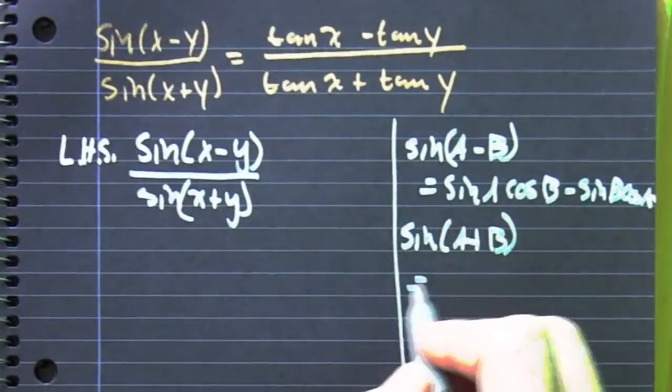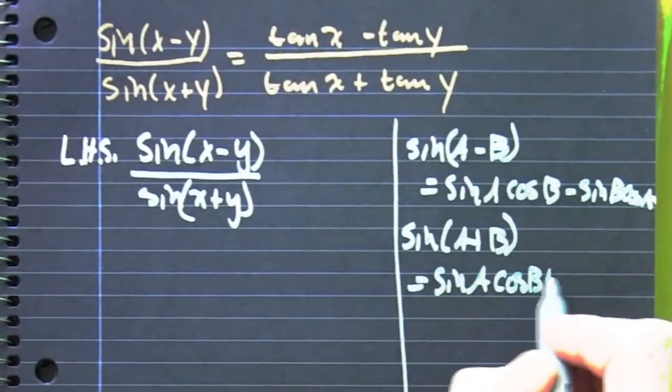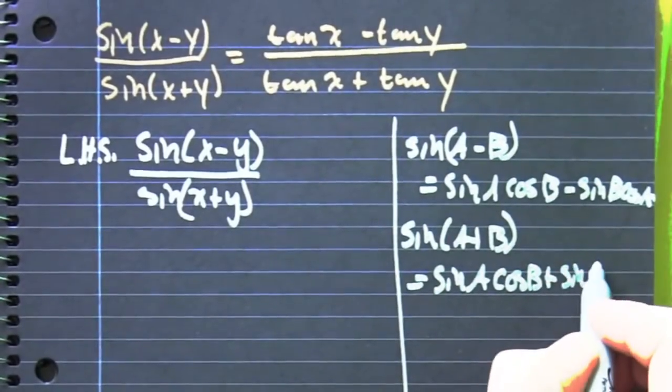Then the sine of a plus b is going to be the sine of a cosine b plus the sine of b cosine a.